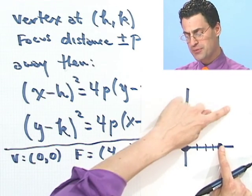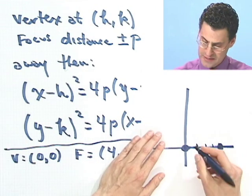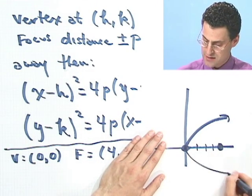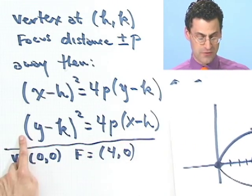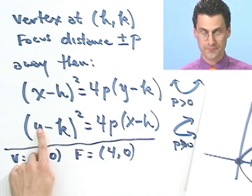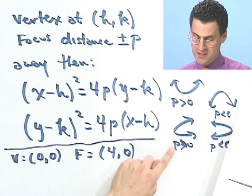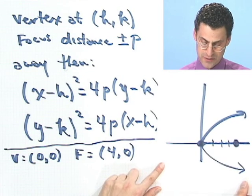So if that's the focus, the parabola sort of wants to go around the focus. So in fact, the parabola must somehow look like this. So that tells me it must be of this form, and p must be positive. OK, so that's pretty good.